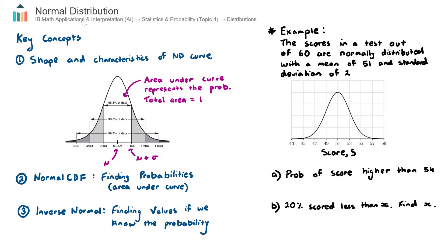But in this video, we are looking at normal distribution, and we have three key concepts to cover here. The first is the shape and the characteristics of the normal distribution curve. And this is the curve here. It's otherwise known as a bell curve. It starts low left, it goes up to the top, and then it goes back down.